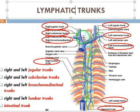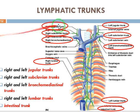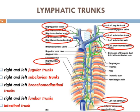The right and left jugular trunks drain lymph from the jugular vein region. The subclavian trunk drains the subclavian vein area, right and left. The bronchomediastinal trunk drains the thoracic wall, lungs, and heart.